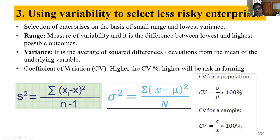We can also use variability to select less risky enterprises. We can use range, variance, and coefficient of variation. We have to select the enterprise with the lowest range (difference between highest and lowest possible outcomes), lowest variance, and lowest coefficient of variation. For example, if enterprise 1 has a range of 20, enterprise 2 has a range of 48, and enterprise 3 has a range of 12 — we should select enterprise 3 because the range is minimum. Similarly for variance: the enterprise with the lowest variance should be preferred.